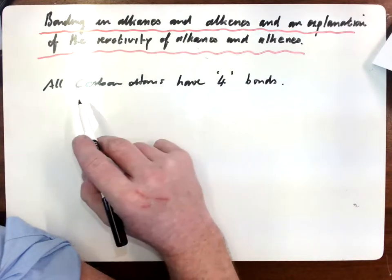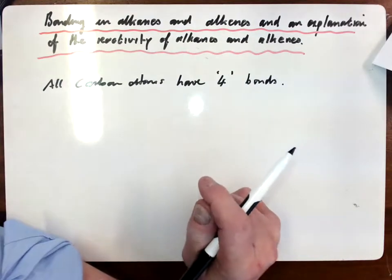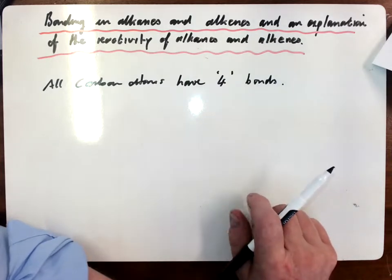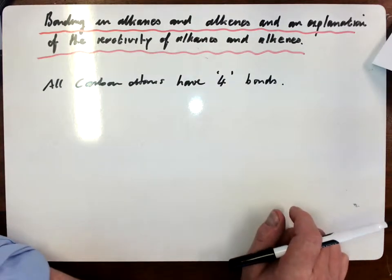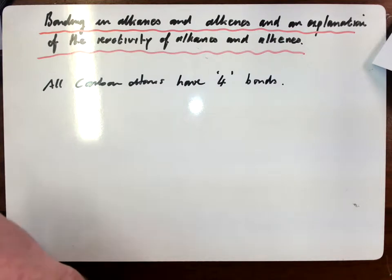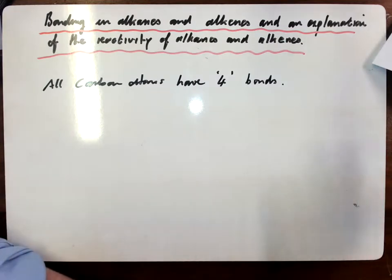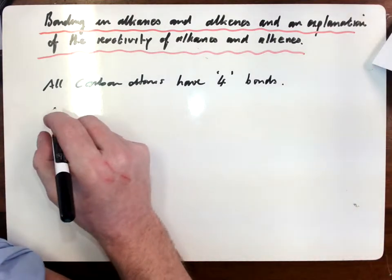The first thing we need to remember is that all carbon atoms have to have four bonds. So whether it's around single bonds or double bonds, a double bond will count as two. All carbon atoms have to have four bonds.